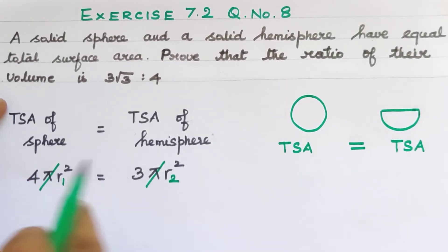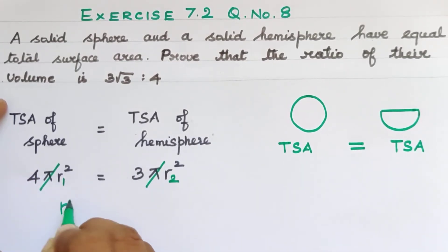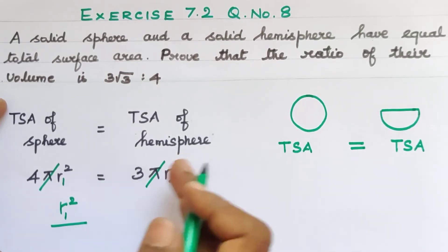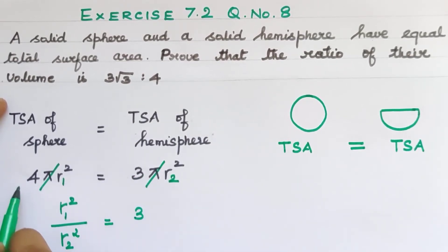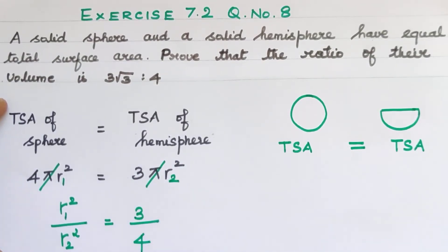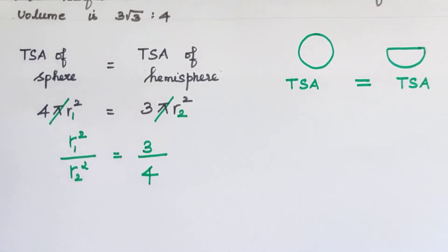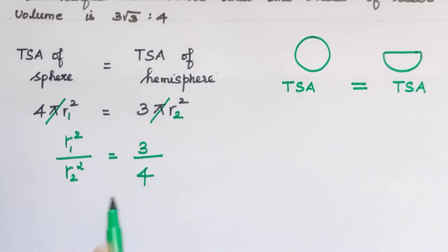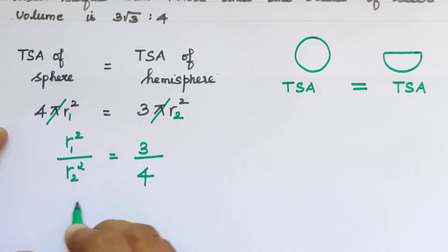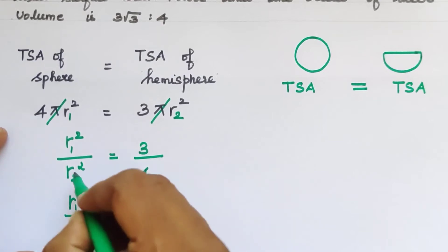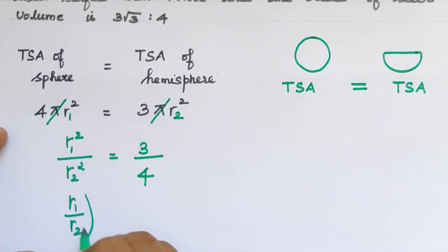Automatically, the 4 here comes over. So R1 squared by R2 squared — this is equal to 3 by 4. Already the 3 is here and the 4 is on this side. Divide by 4. Since we don't have individual values given, we need to remove the square. So we take the square root of both sides. R1 by R2 — taking square root of both sides — this is equal to √3 by 4, which simplifies. So R1 squared by R2 squared equals 3 by 4.